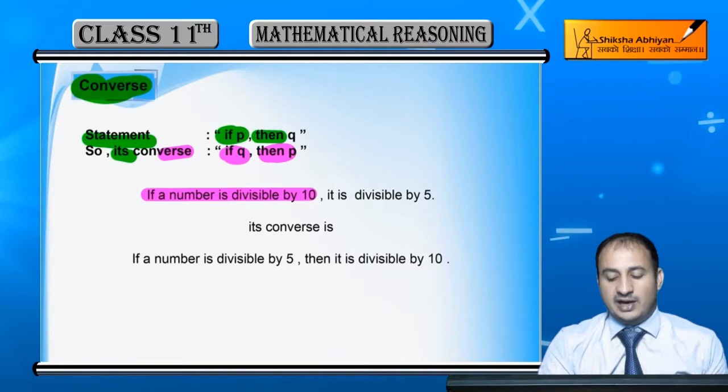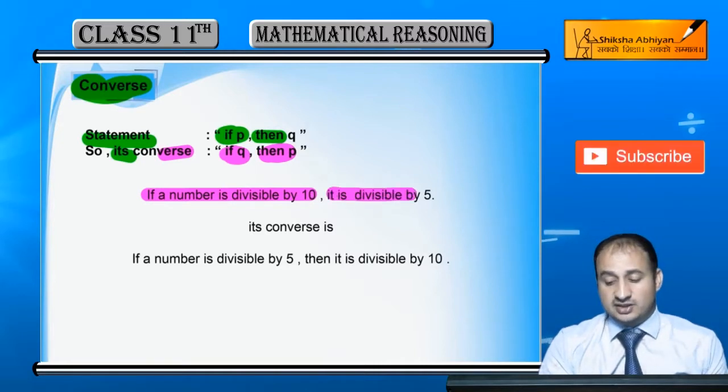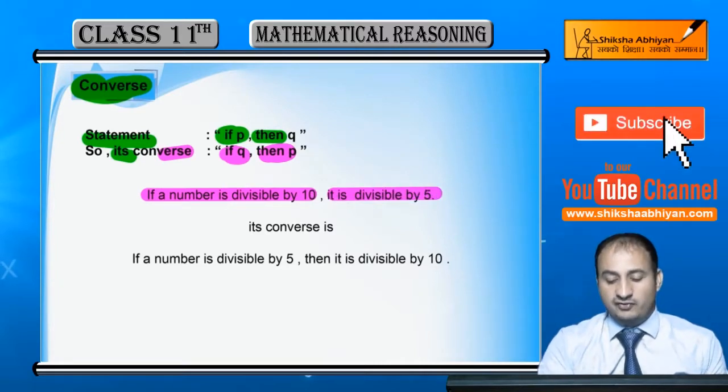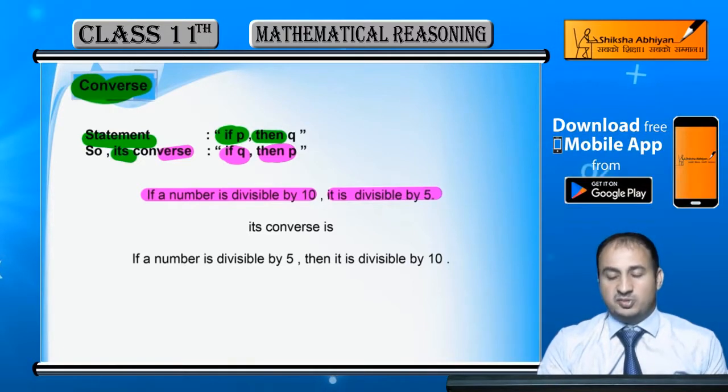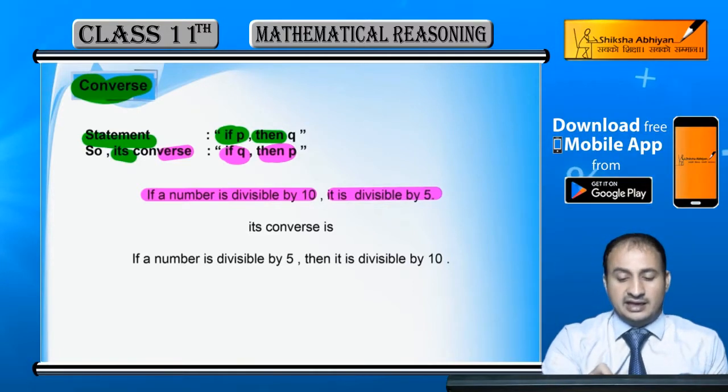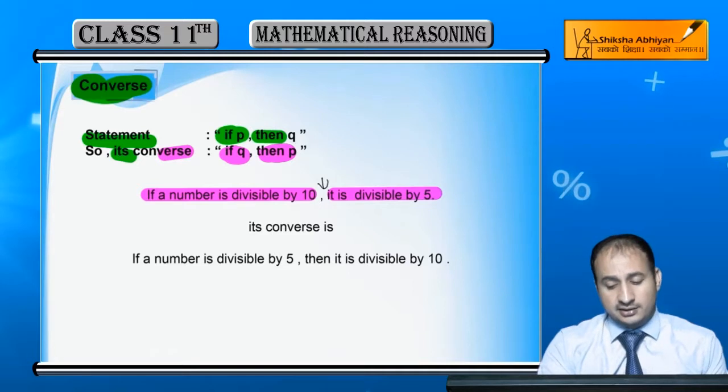For example: If a number is divisible by 10, then it is divisible by 5. That's the original statement.